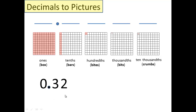Look down here — you see 0.32. The best thing to do is label underneath each digit what it is in Kipish. So we have 0 boxes because the ones place is a box. Underneath the 3, call out what you think we're going to write. Bars — you were correct. What about underneath the 2? Bytes is correct. So that basically means we have 0 boxes, 3 bars, and 2 bytes.